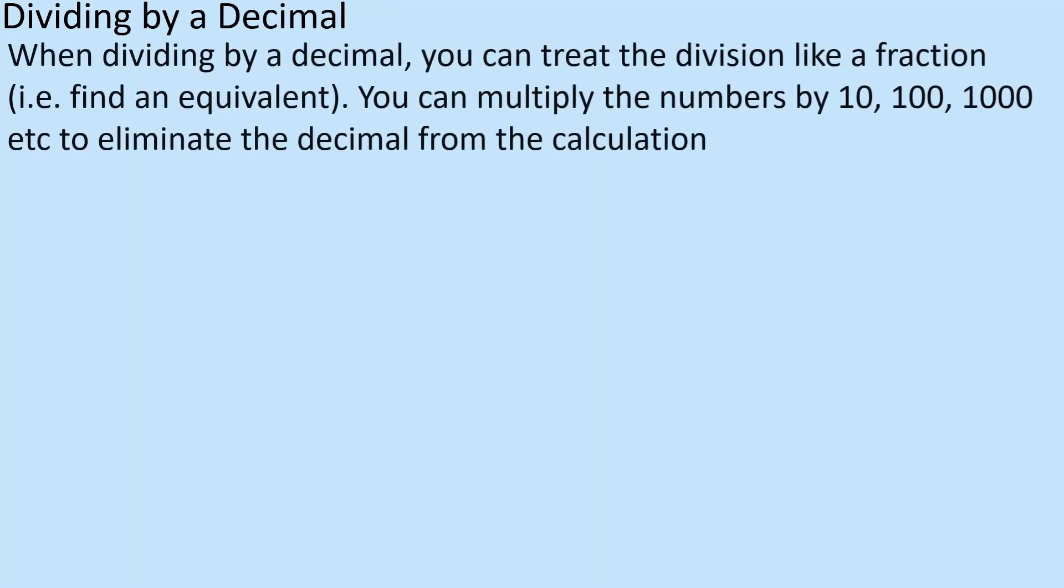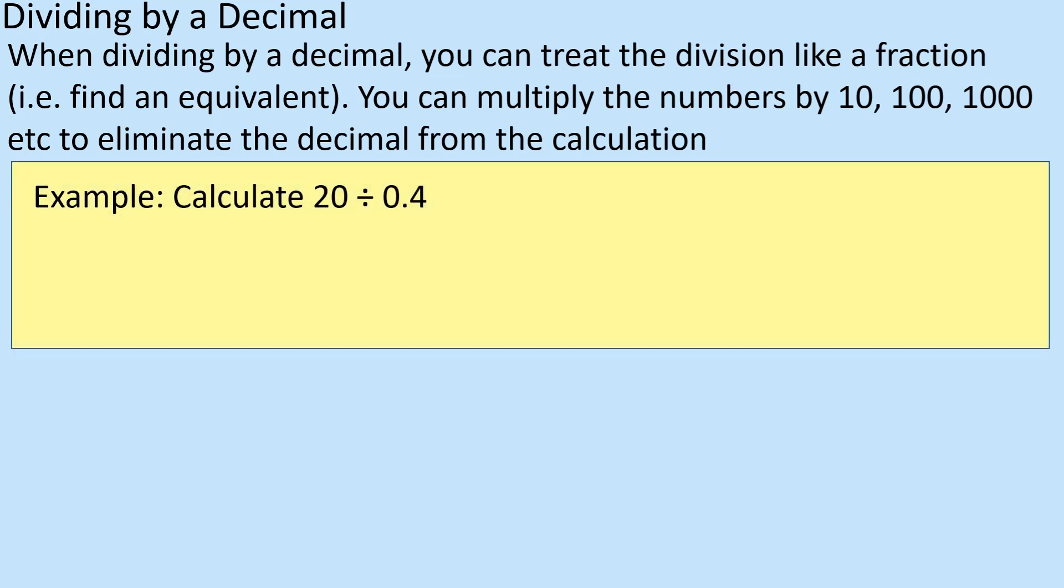If you are dividing by a decimal, however, not quite the same way. So when dividing by a decimal, you can treat the division like a fraction and you can multiply the numbers by 10, 100, 1000, etc. to eliminate the decimal from the calculation, so you can manipulate it like you would a fraction. So I'll explain what I mean by that.